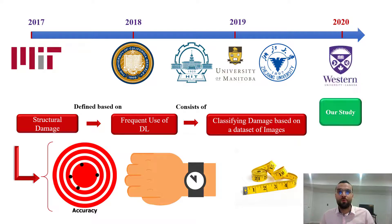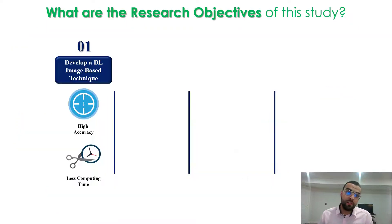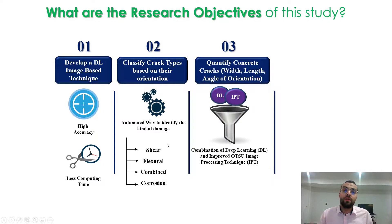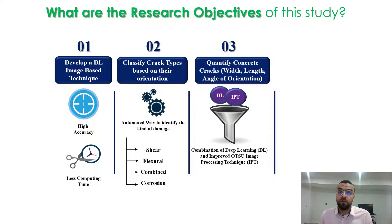For this reason, our study was proposed in 2020 at Western University to tackle these research objectives. We tried to develop a deep learning image-based technique with high accuracy and less computing time. We classified crack types based on their orientation to automate identification of damage type — whether shear, flexural, combined, or corrosion. Third, to combine the OTSU improved image processing method with deep learning classification to quantify concrete cracks in terms of width, length, and angle of orientation.